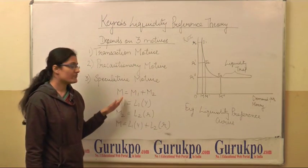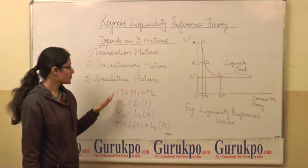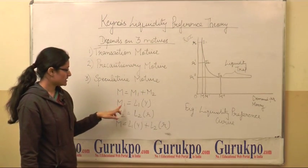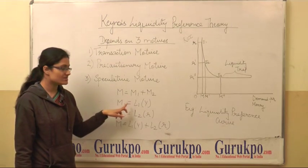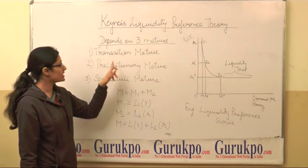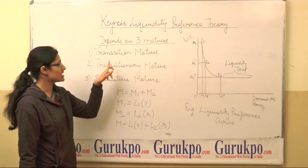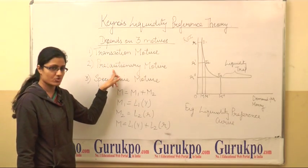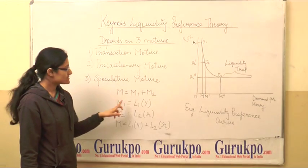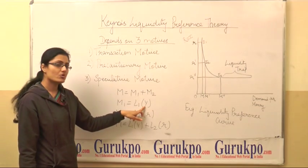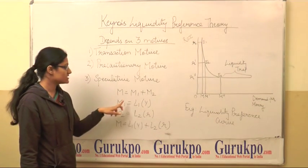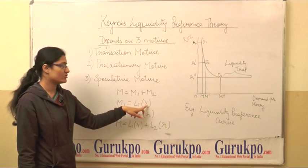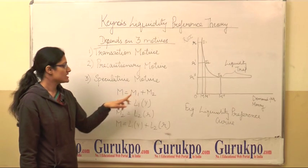The demand for money can also be given in the form of a function. M1 represents the demand for money under transaction and precautionary motive. As mentioned, it depends upon level of income, so M1 is a function of level of income.